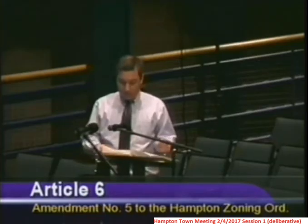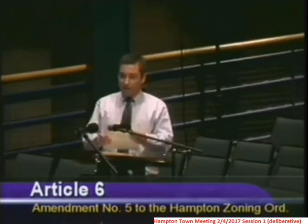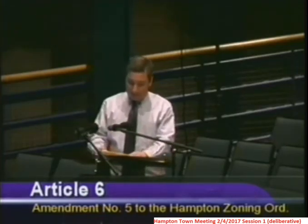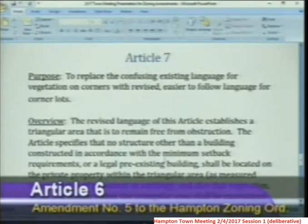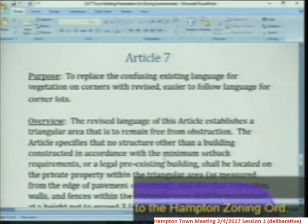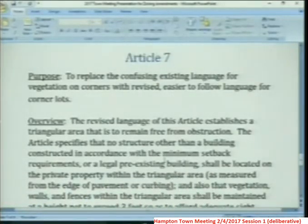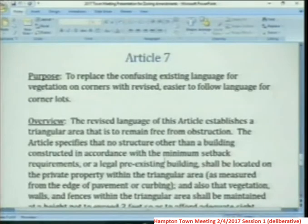Article 7. The purpose of Article 7 is to replace the confusing existing language for vegetation on corners with revised, easier-to-follow language for corner lots.